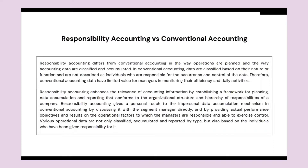In conventional accounting, data are classified based on their nature or function and are not described in terms of who is responsible for the occurrence and control of the data. Therefore, conventional accounting data have limited value for managers in monitoring their efficiency. In responsibility accounting, the relevance of accounting information is enhanced by establishing a framework for planning, data accumulation, and reporting that conforms to the organizational structure and hierarchy of responsibility of a company.